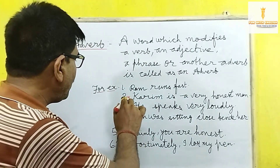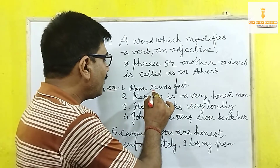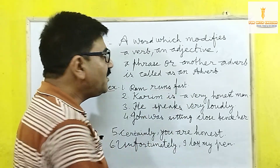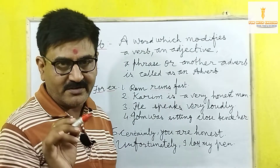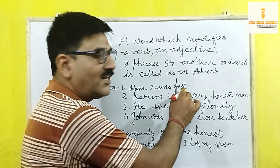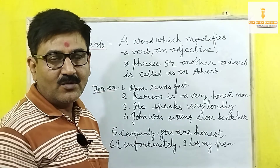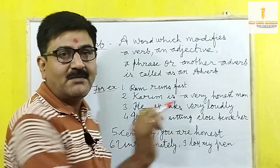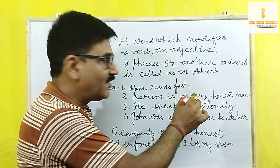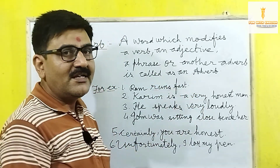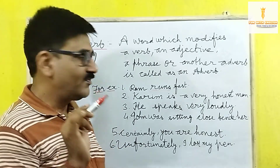देखें example — 'Ram runs fast.' यहाँ Ram subject है और runs verb है। Fast — राम तेज दौड़ता है, कैसे दौड़ता है? तेज दौड़ता है। Fast उसकी विशेषता बतला रहा है, क्रिया की विशेषता हुई — इसलिए 'fast' is an adverb, क्योंकि यह verb की विशेषता बताता है।